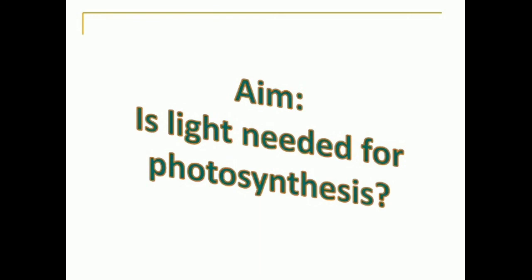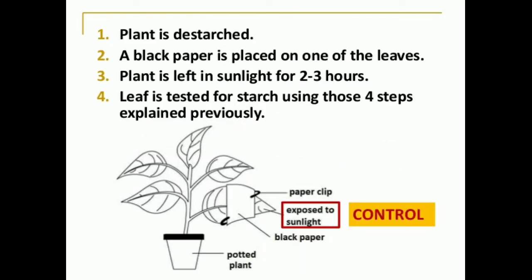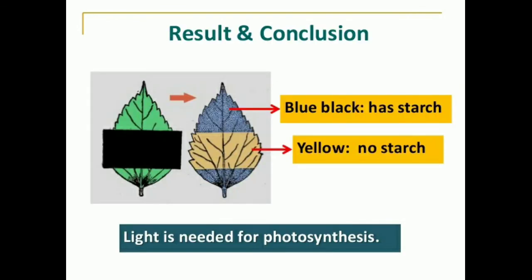The next experiment is to show that sunlight is essential for photosynthesis. Materials required: a potted plant, dilute iodine solution, paper clips, and black paper. Place a potted plant in a totally dark room for about 3-4 days to remove any starch from the leaves, as plants do not photosynthesize in the dark. Pluck a leaf, then use paper clips to cover part of the leaf with a black paper strip. Keep the potted plant in sunlight for a few hours. The exposed part of the leaf turns bluish-black, while the covered part does not, showing that photosynthesis takes place only in the presence of sunlight.